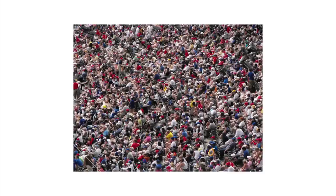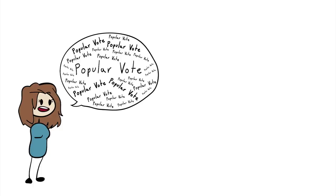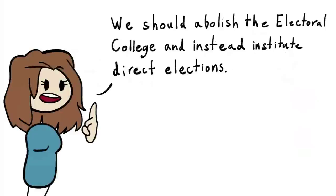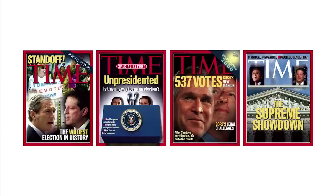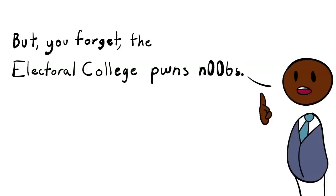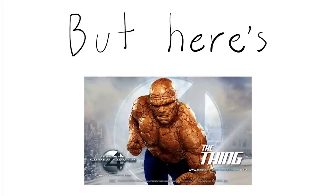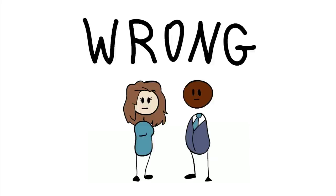When most people talk about the popular vote, they talk about it as opposed to the electoral college. Some argue that we should abolish the electoral college and instead institute direct elections, because the electoral college doesn't always elect the candidate with the most votes. Others love the electoral college, as it gives increased importance to smaller states, something direct elections don't do. But here's the thing — both these views are wrong.